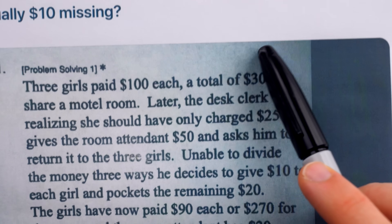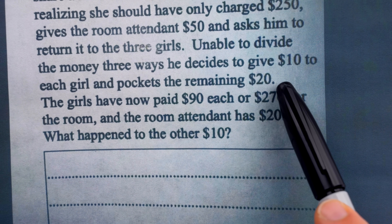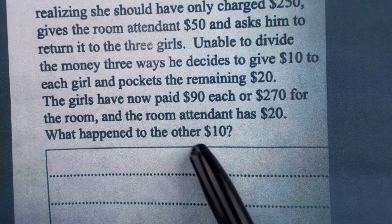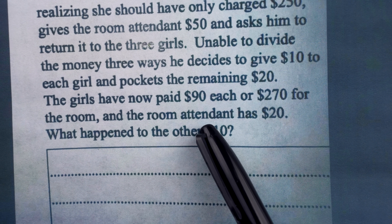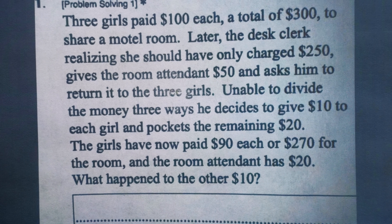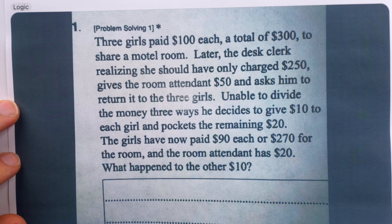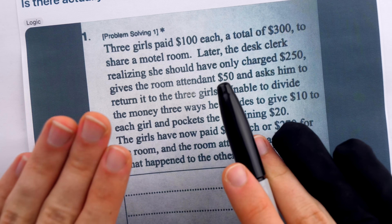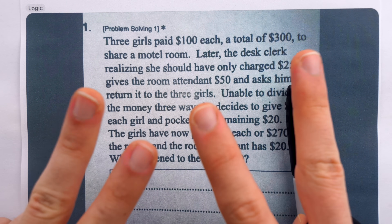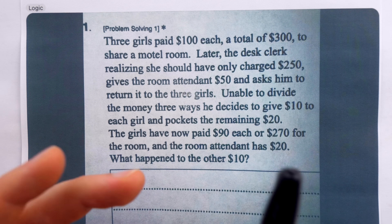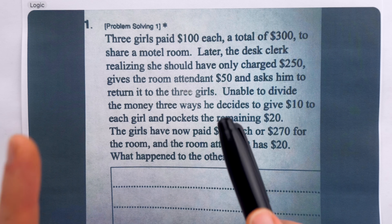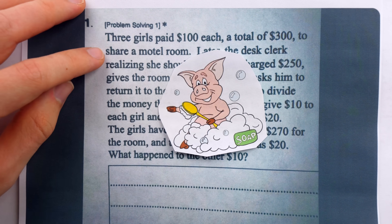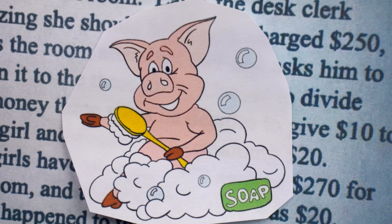What happened to the other $10? So they paid $300, but then at the end of the day, we've got $270 plus $20, that's $290. So what happened to the other $10? It can definitely seem a bit tricky at a glance. Something does seem amiss. But this is just another take on a classic riddle, the so-called missing dollar riddle. It's deliberately written to tempt you into farcical reasoning, so let's look closer at the details so we can spot the shrouded hogwash.